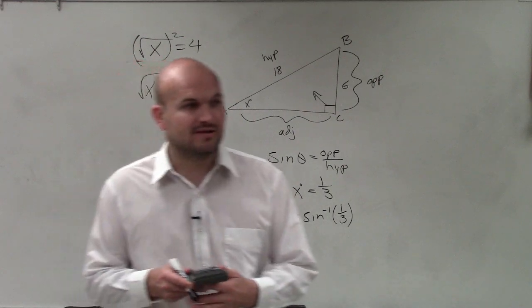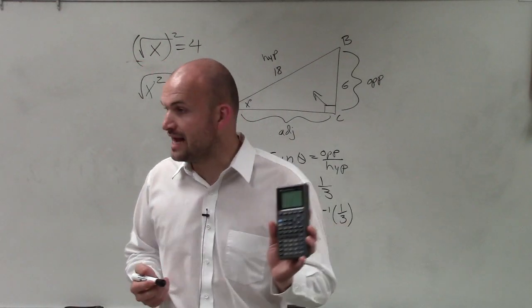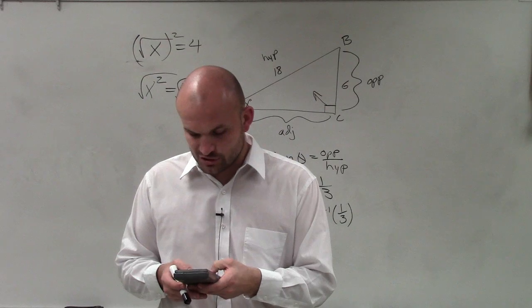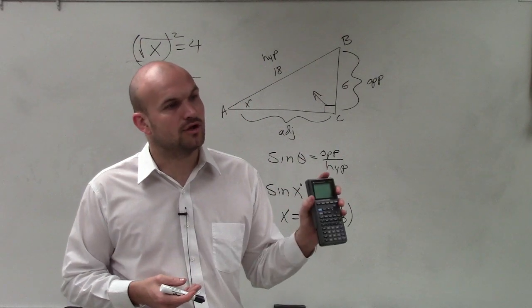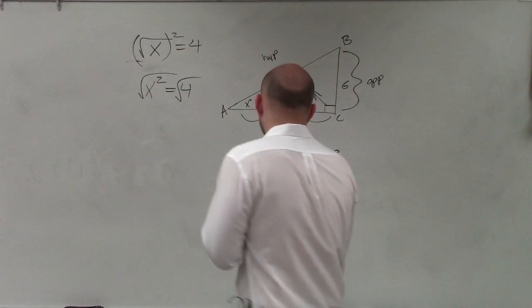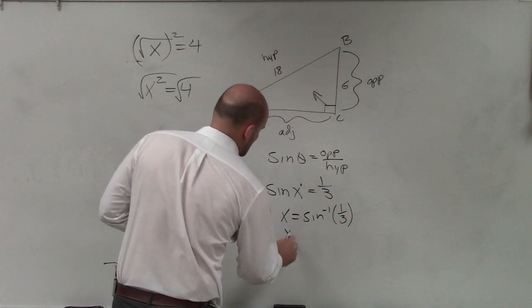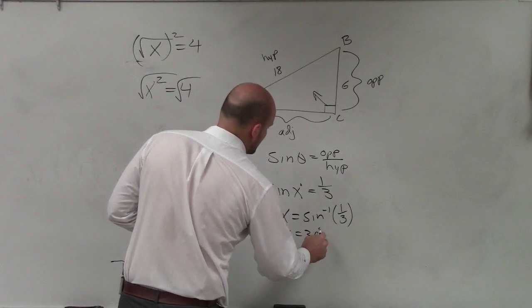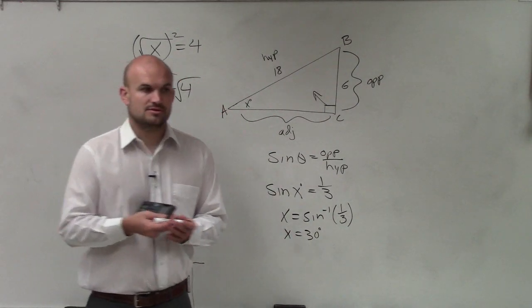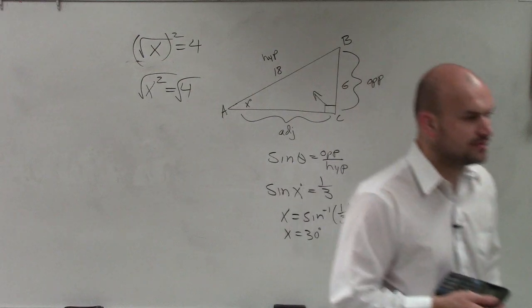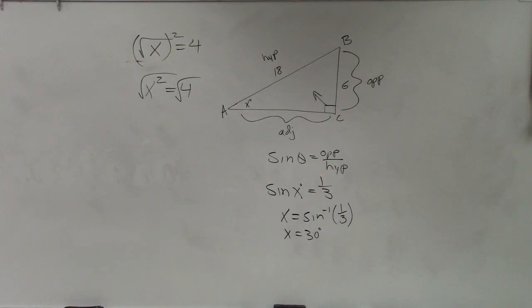And all I hit is second inverse, so it looks like exactly that, sine inverse. And then I just do 1 divided by 3. And when I do that, I get an angle of 30 degrees. Therefore, x equals 30 degrees. So what I would like you guys to do is show as much work as possible, and let's see if...